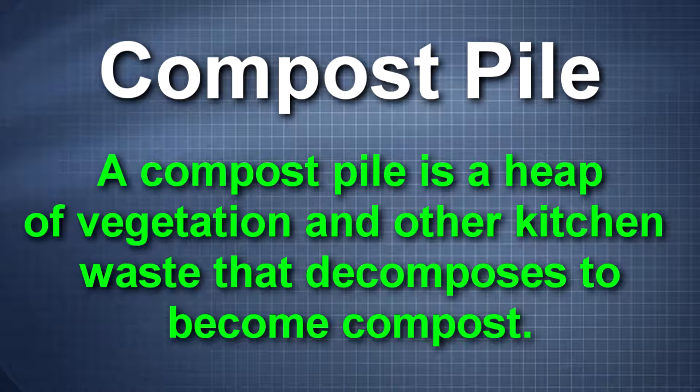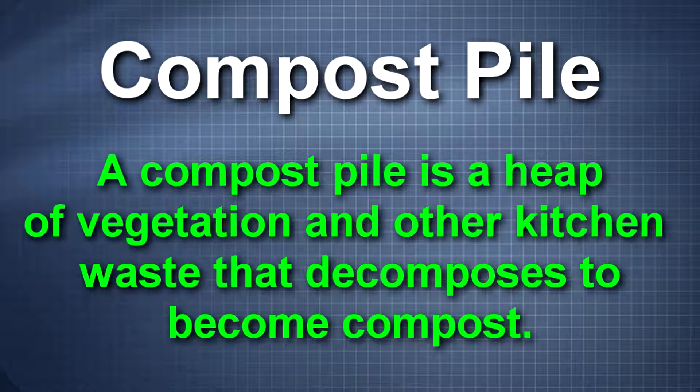Number three, setting up a compost pile. A compost pile is a heap of vegetation and other kitchen waste that decomposes to become compost. If 1 million people composted for just one year, 82,000 pounds of food would be turned into nutrient-rich fertilizer instead of wasting away in a landfill.